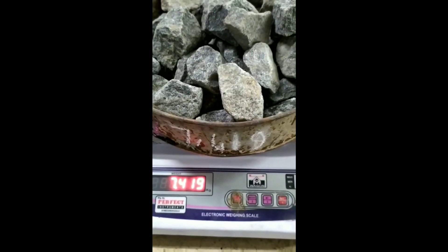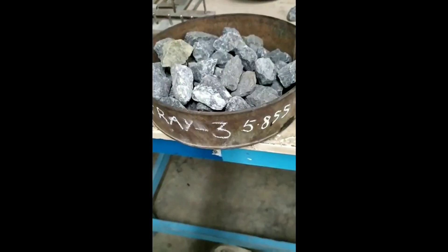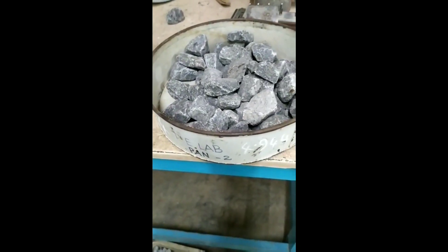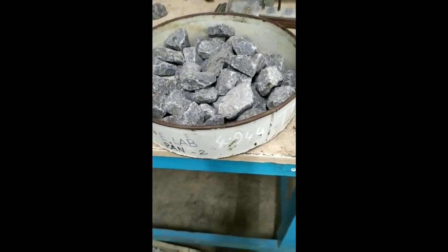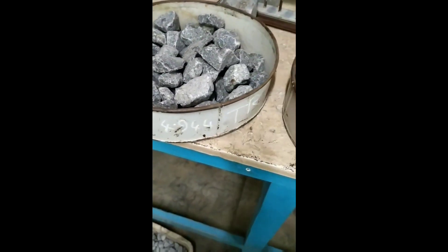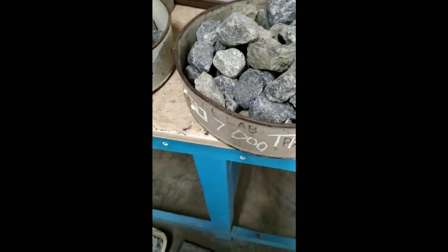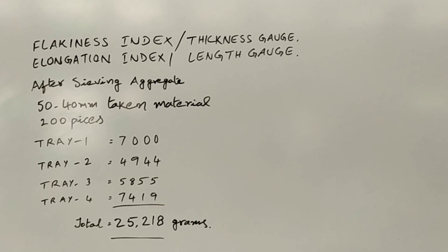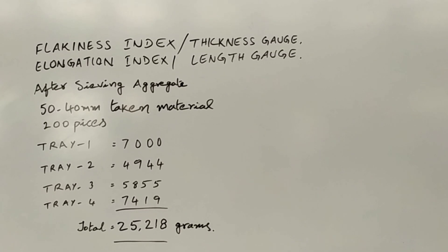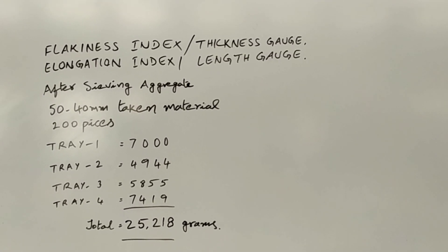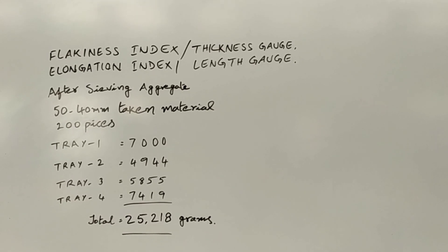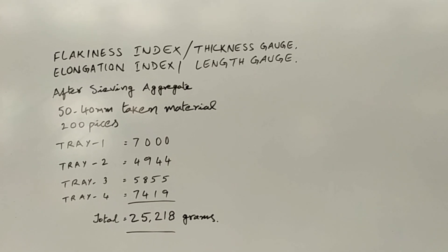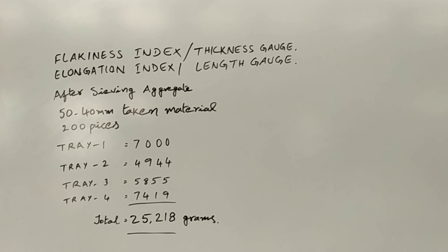After sieving, we take the aggregates passing 50 mm and retained on 40 mm. We need to take 200 pieces of these aggregates and weigh them. The total weight of the 200 pieces across trays 1, 2, 3, and 4 is 25,218 grams.